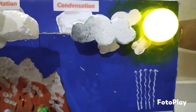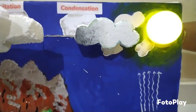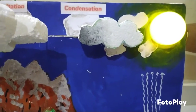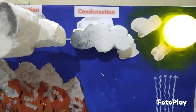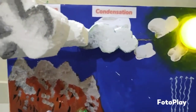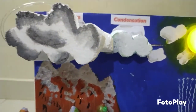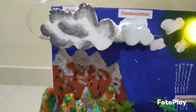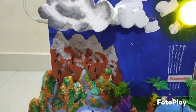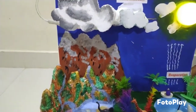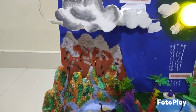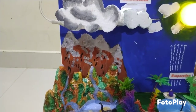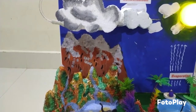This is called condensation. When these clouds become too heavy and cannot hold any more water, it bursts open to give out rain. This is called precipitation.